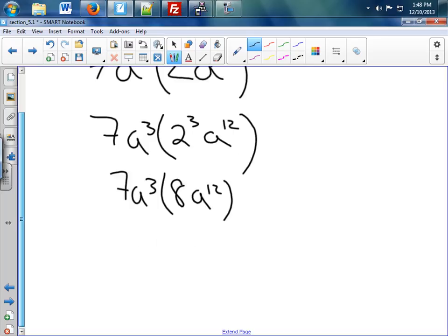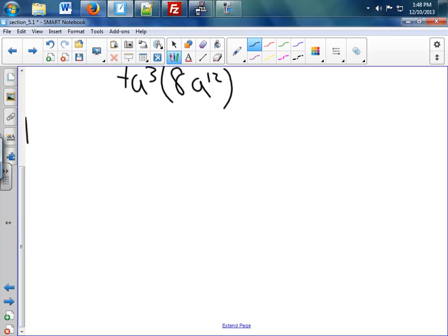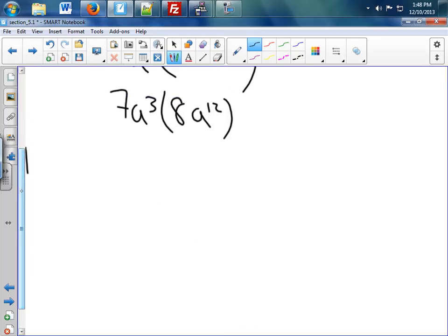Now all I'm doing is multiplying. So 7 times 8 is 56. a to the 3rd times a to the 12th is a to the 15th. We'll use the power rule, the product rule, the power of the product rule. There's a lot of them there.